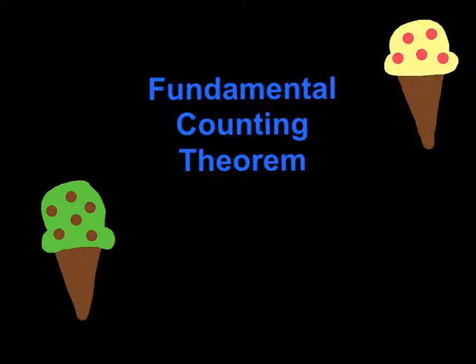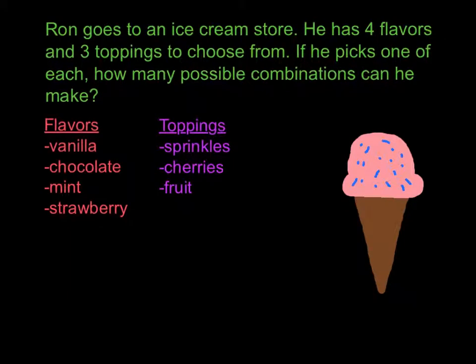The topic of this is the fundamental counting theorem. The problem is: Ron goes to an ice cream store. He has four flavors and two toppings to choose from. If he picks one of each, how many possible combinations can he make?